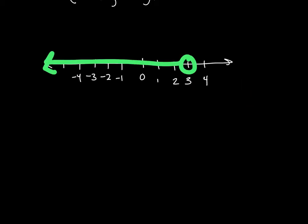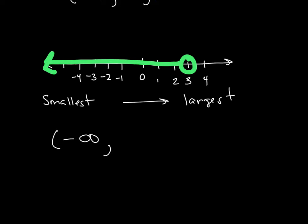Looking at another one — same idea. I have an open circle, so that means a parenthesis. But this one is going towards a very large negative direction. When writing interval notation, always go from the smallest to the largest, the same order as the number line. Because this is going towards negative infinity, I write that as negative infinity — and negative infinity always gets a parenthesis. Then I'm going towards 3, and that 3 is an open circle, so 3 gets a parenthesis as well.